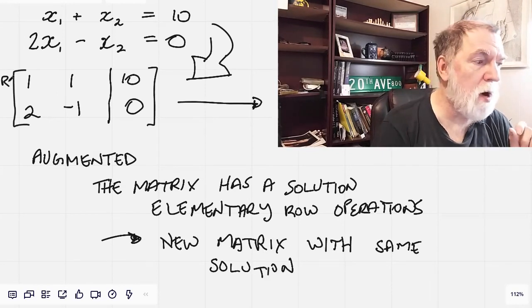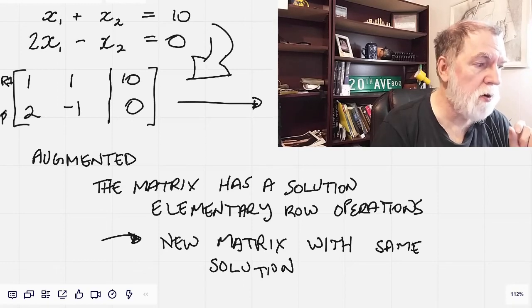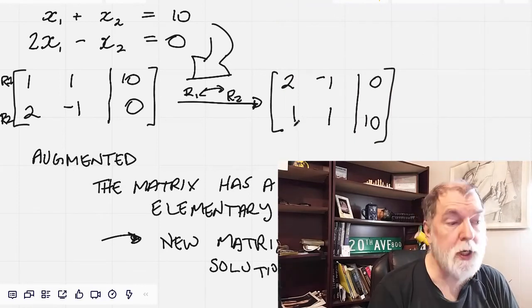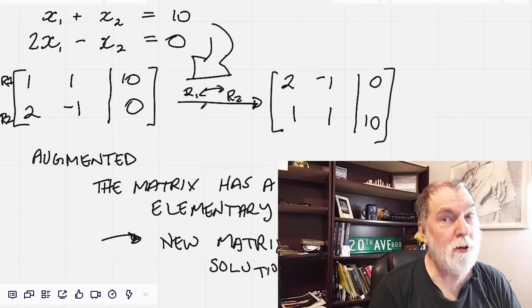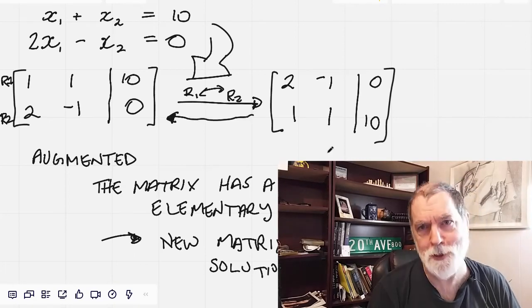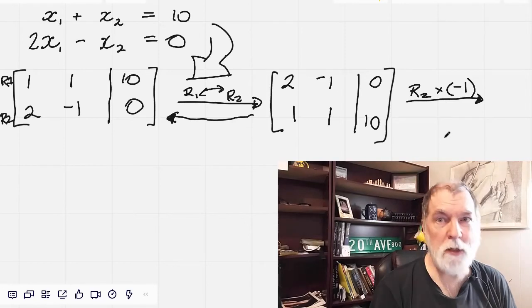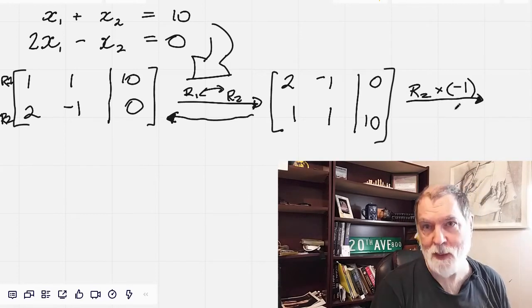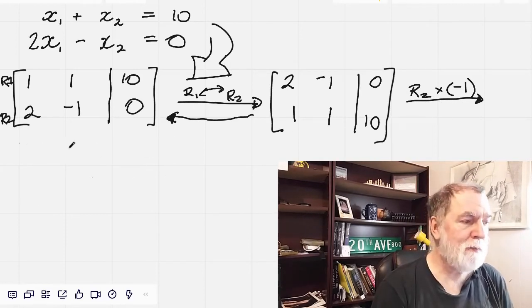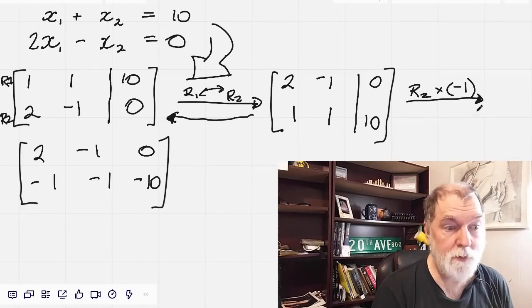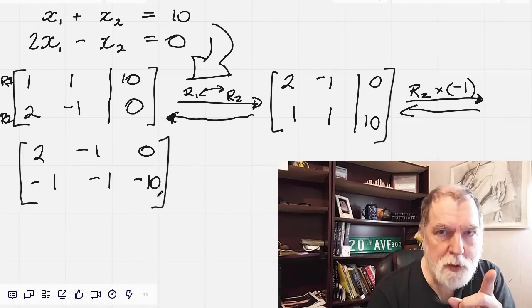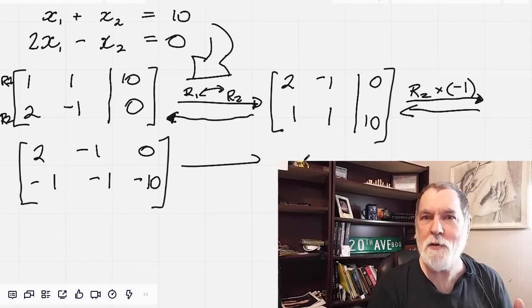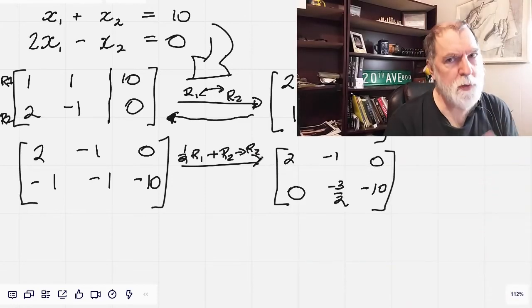For example, if this is row 1 and this is row 2, we can swap rows. This new matrix has the same solution. We can also reverse the row operation. No change to the solution. We can also multiply any row by a constant. In this example, we'll multiply row 2 by negative 1. And we can also reverse that. New matrix, same solution. Finally, we can take a multiple of one row and add it to another row. Also, reversible process.